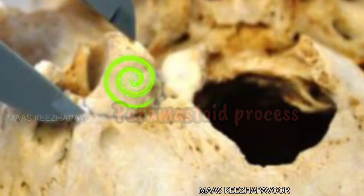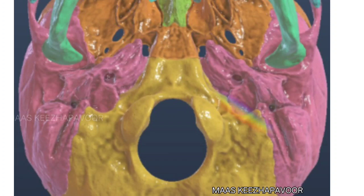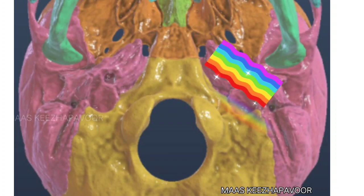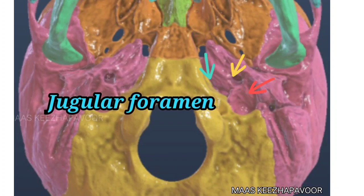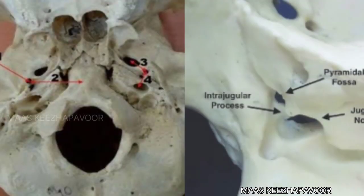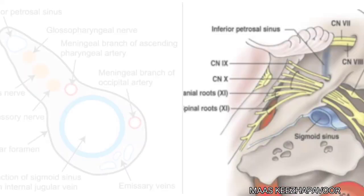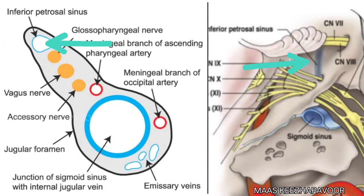This process sometimes may be long enough to articulate with the transverse process of the atlas. The anterior surface of the jugular process is indented to form the jugular notch, which articulates with the petrous part of the temporal bone, thereby forming the jugular foramen. The jugular foramen is divided into three compartments by two bony spicules called intrajugular processes. The anterior compartment transmits the inferior petrosal sinus, which is the only sinus coming out of the skull and joins the internal jugular vein.